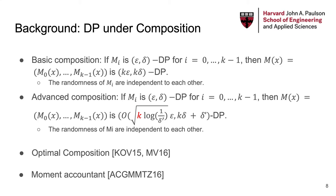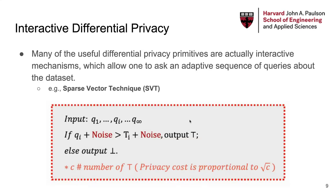For example, moment accountant is used in computing the privacy loss in differentially private stochastic gradient descent. All of the composition theorems discussed above focus on, or implicitly assume, that the underlying DP mechanisms are one-shot algorithms that only output one answer. However, many useful differential privacy primitives, such as sparse vector technique, are actually interactive mechanisms, which allow one to ask an adaptive sequence of queries about the dataset. Sparse vector technique could potentially accept an infinite amount of queries, while paying privacy costs only for queries that exceed the noisy threshold.